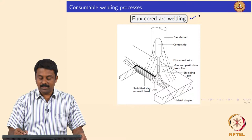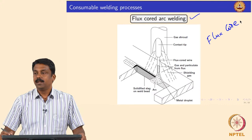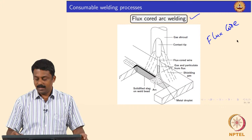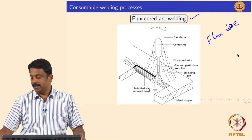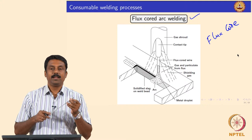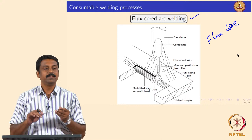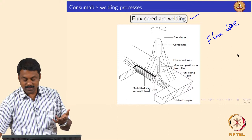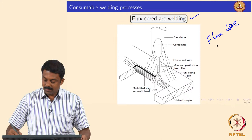This is mainly achieved by flux cored arc welding. The electrode has a core, and that core is flux, with an outside shield made of metal. Alternatively, you can have a metal core with flux on the outside, or you can make the electrode as a tube, fill the tube with flux, and the tube surface is metal. These kinds of electrodes are known as flux cored electrodes.